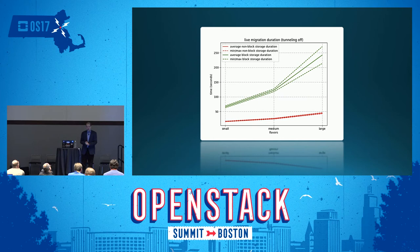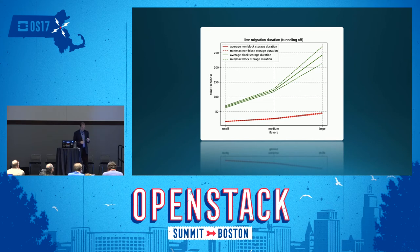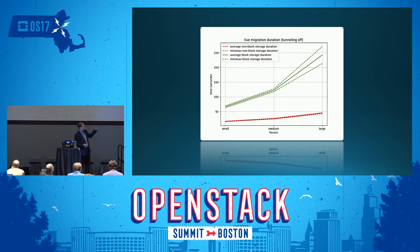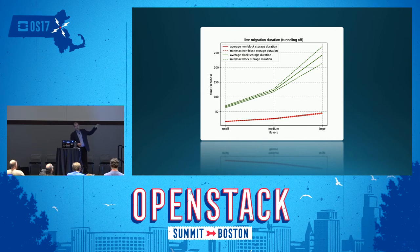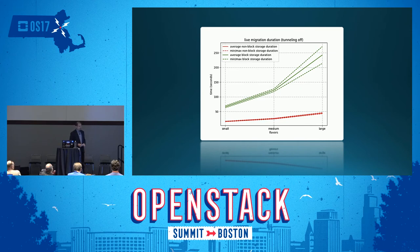The red line is about when you've got remote storage. As you would expect, when you've got remote storage it's a lot quicker to move between source and destination because you're not copying all the disk. The green line is where we're copying the disk. The green line is effectively dominated by the disk copy — it goes up proportionally to the size of the disk. Half the disk was full in each of the flavors. The key point: the green line is there, it did work. You can move local disks, but it does take significantly longer because there's more data to copy.